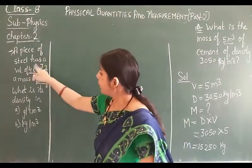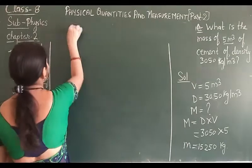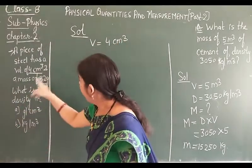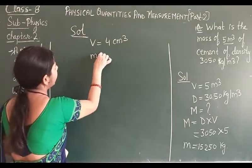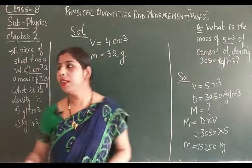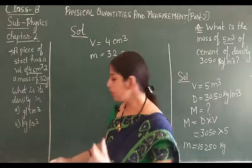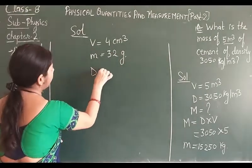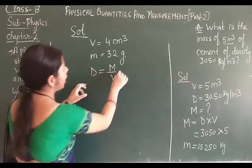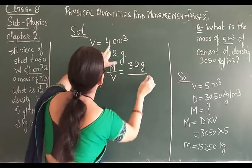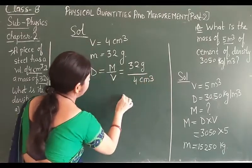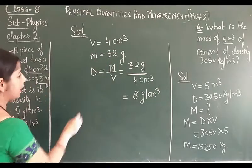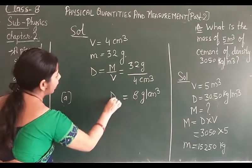The next question: a piece of steel has a volume of 4 cubic centimeters and a mass of 32 grams. The question asks for density. As we know, density equals mass divided by volume — 32 grams divided by 4 cubic centimeters — so the answer is 8 gram per cubic centimeter.